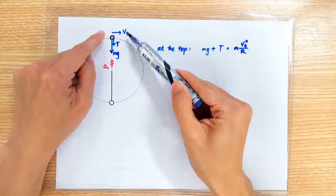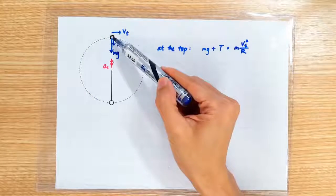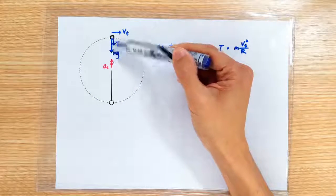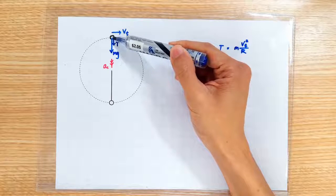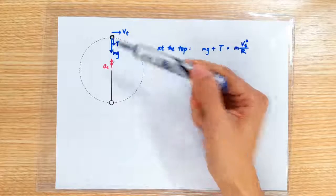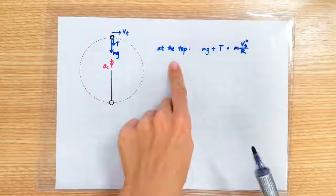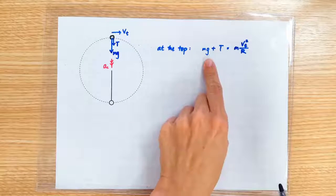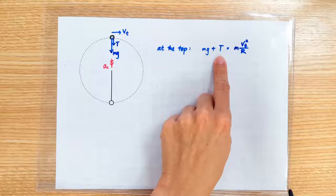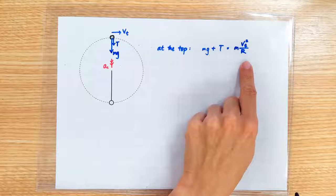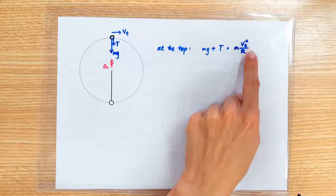So what must the velocity at the top be? At the top position, both the gravitational pull and the rope's tension are acting downward in the centripetal direction. So we apply Newton's second law on the stone. At the top position, the weight and the tension together provide the required centripetal force, which we are going to write as m v squared over r.